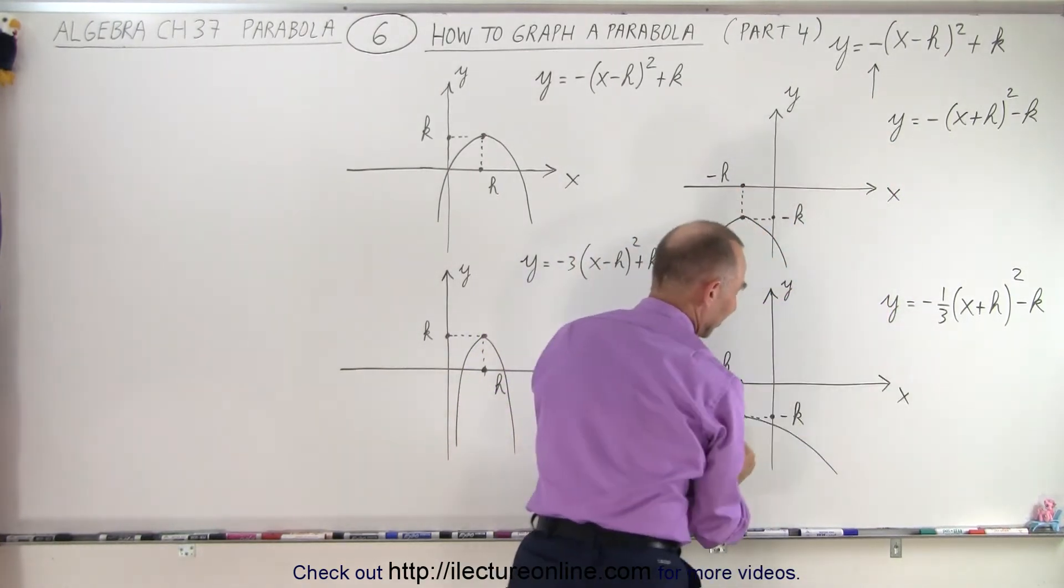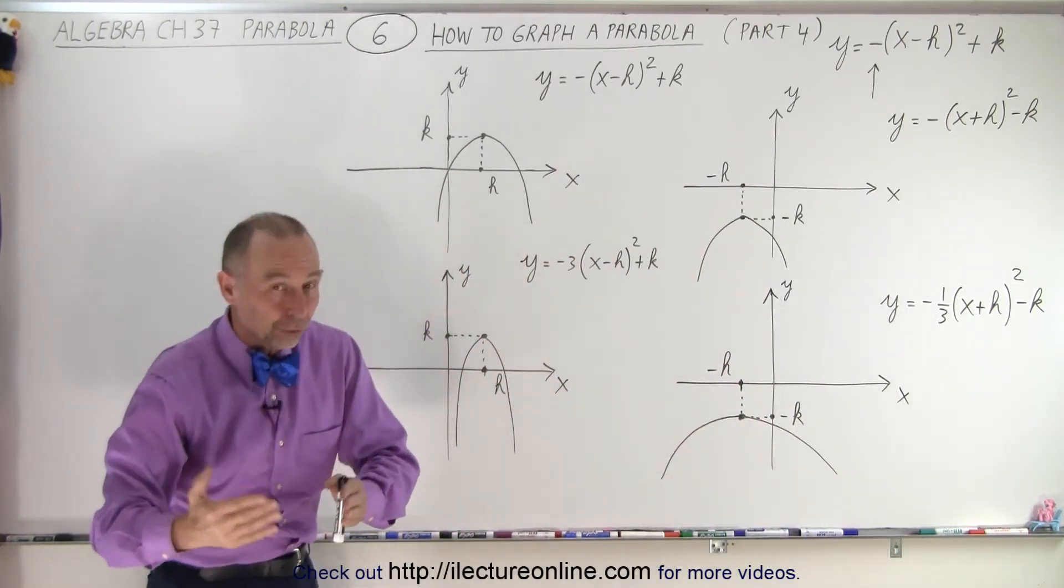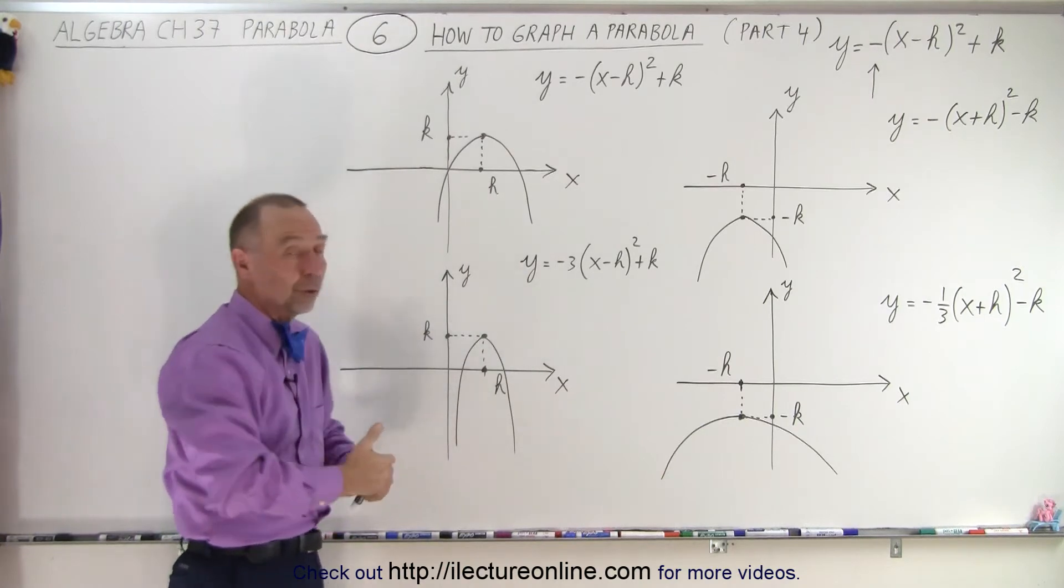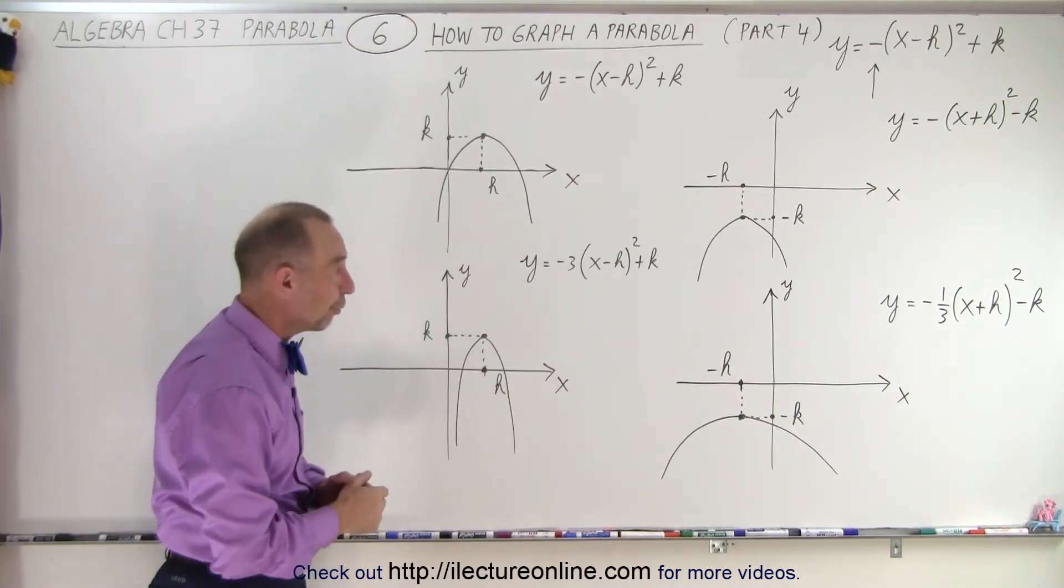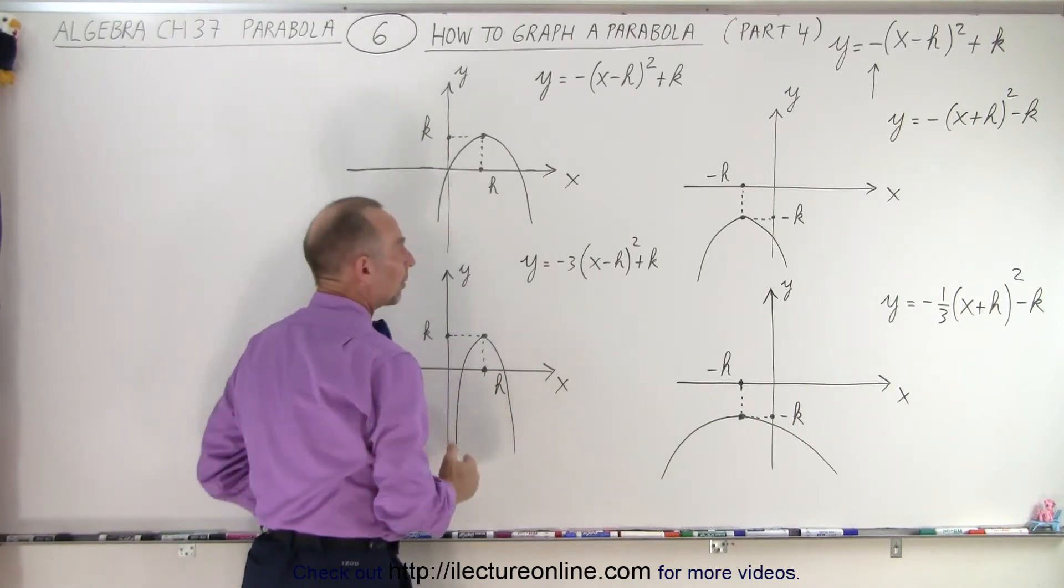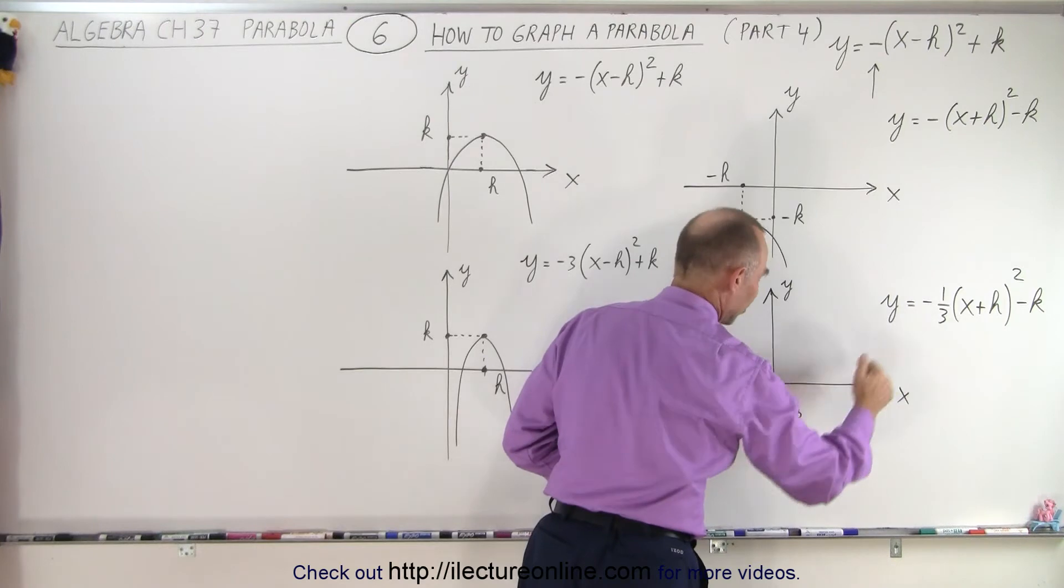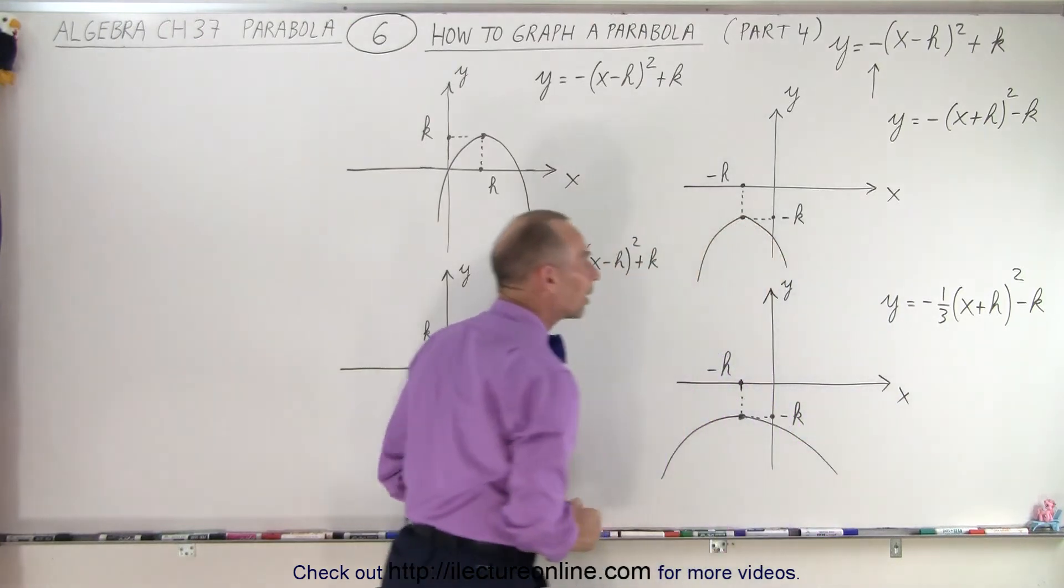A 1/3 means that the parabola is wider, a 3 means the parabola is skinnier. Of course, it doesn't need to be 1/3 or 3, it could be 1/2 and 2, or 1/4 and 4, and so forth. But the idea is that the bigger the number, the skinnier the parabola. The smaller the fraction is, the wider the parabola becomes.